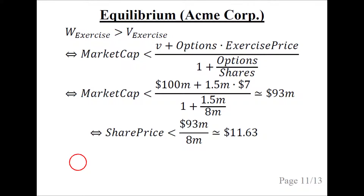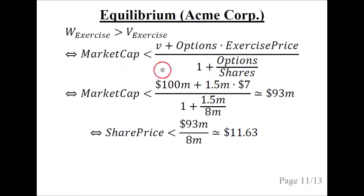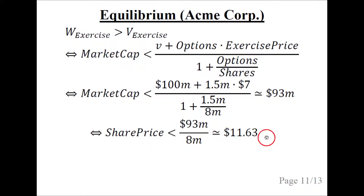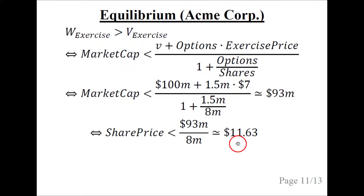The equilibrium is where the value to eternal shareholders of ACME Corporation is unaffected by the share buyback. Expressed as an inequality so we can see when the share buyback actually increases value, we plug in the numbers: V is $100 million, options is 1.5 million, exercise price is $7, and so on. What we get is that the market cap must be less than about $93 million, which is equivalent to the share price being less than about $11.63. So whenever the share price is less than $11.63, under these assumptions, the share buyback increases value to eternal shareholders. Conversely, if the share price is greater than $11.63, the share buyback decreases value to eternal shareholders.